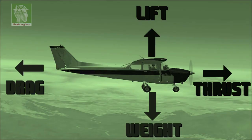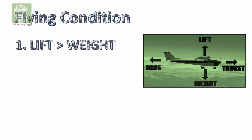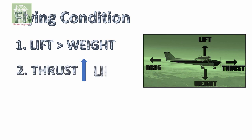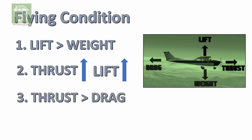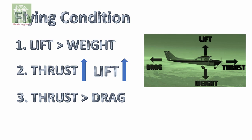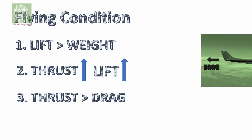For the aeroplane flying mechanism, you need to know four forces and their directions: lift, weight, thrust, and drag. If lift is more than weight, then the plane will fly. If thrust increases, then lift will obviously increase. If thrust is more than drag, then the plane will move forward.